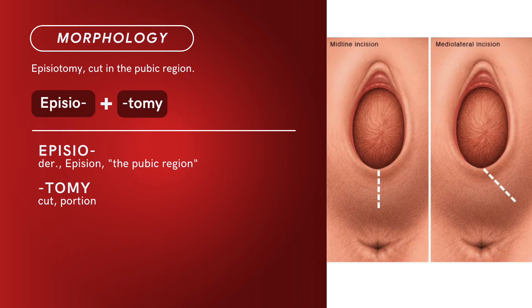Term morphology — episiotomy means 'cut in the pubic region.' It's a compound of episio plus tomi. Episio is derived from epision, meaning 'the pubic region,' and tomi is derived from tomus, meaning 'cut' or 'portion.' There you have it: compound term, episiotomy.